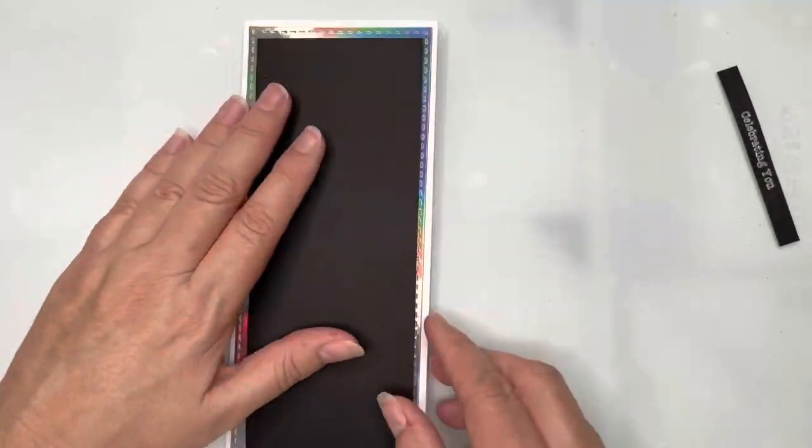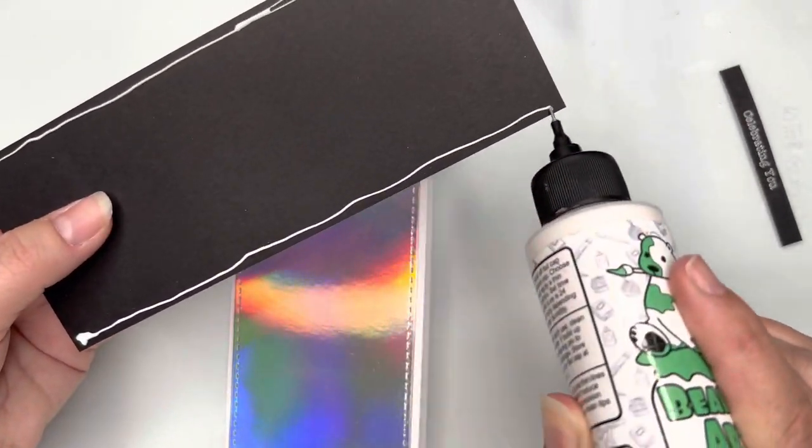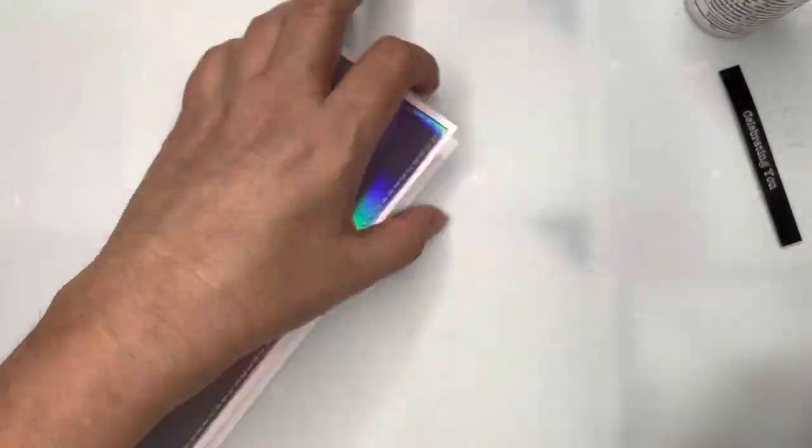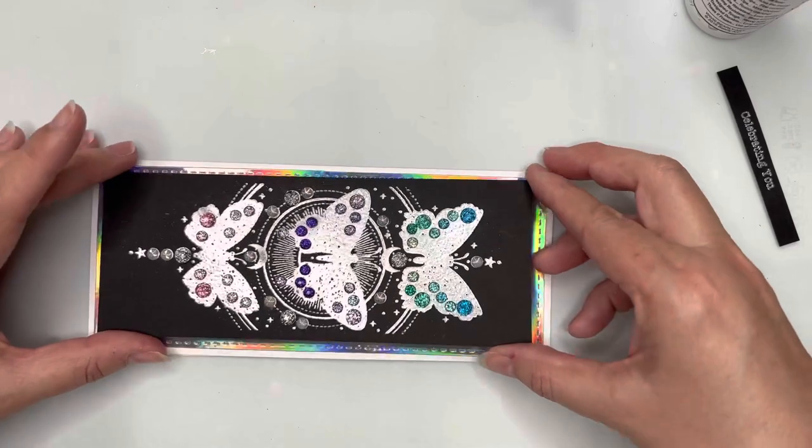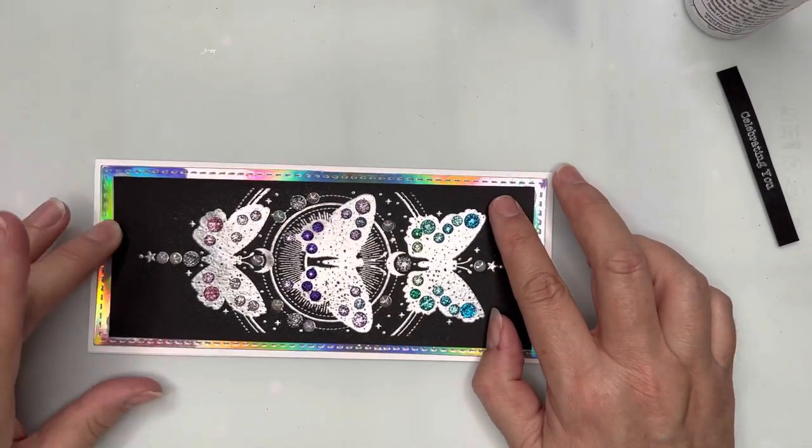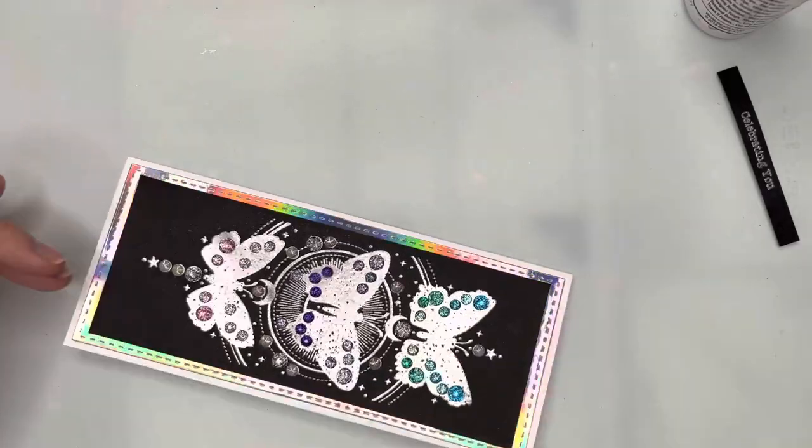So this is the butterfly panel, this time in silver embossing powder and decorated in blues and greens with the glitter enamel drops. Just placing that into the center of my holographic paper. I'll then take a wet wipe and wipe off the wet glue.